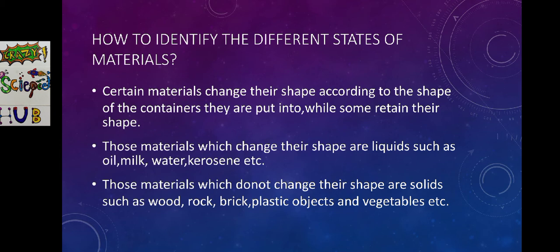How to identify the different states of materials? Certain materials change their shape according to the shape of the containers they are put into, while some retain their shape. Those materials which change their shape are liquids such as oil, milk, water, kerosene, etc. Those materials which do not change their shape are solids such as wood, rock, brick, plastic objects and vegetables. Still, many objects are there which do not change their shape.